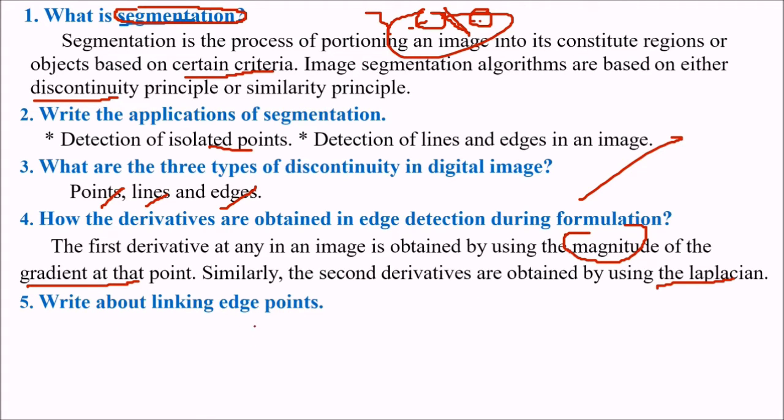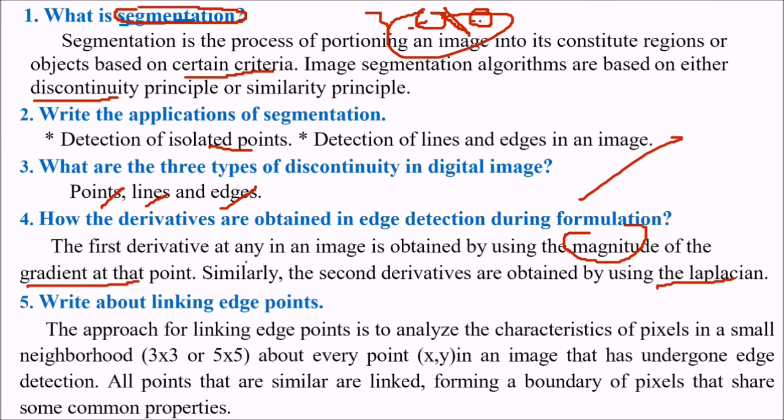Write about linking edge points. The approach of linking edge points is to analyze the characteristics of pixels in a small neighborhood, say 3x3 or 5x5, about any point xy in an image that has undergone edge detection. All points that are similar are linked forming a continuous boundary of pixels that share some common properties.